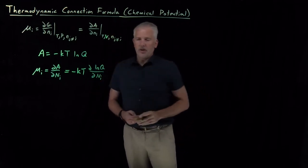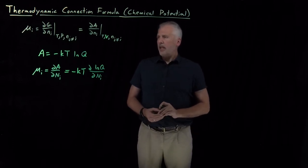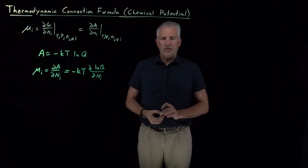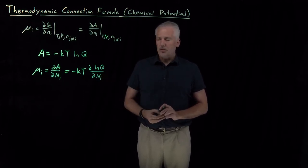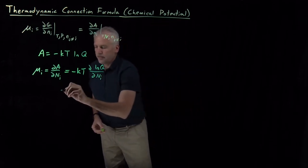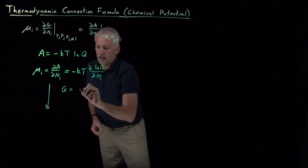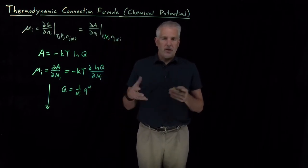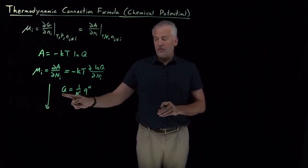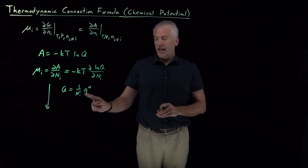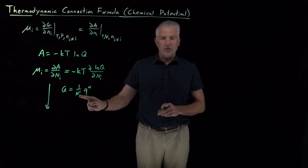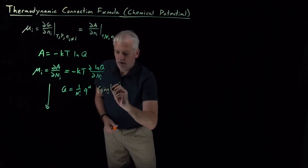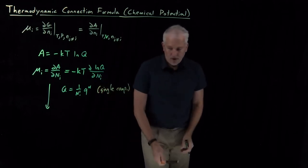We need to remember what the partition function is for some arbitrary system. For a single component system, if I know the partition function for a single molecule and I have N of those molecules, if all the molecules are the same, the whole system partition function is the individual molecule partition function raised to the N. And if they're indistinguishable from one another — which identical molecules usually are — then I divide by N factorial. That would be true for a single component system where I only have one type of molecule.